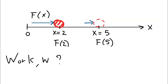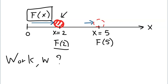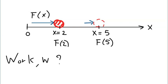To get an idea about how to compute work done by a variable force, look at the following schematic diagram. You have an object that is acted upon by a force that is dependent on the coordinate of the object. So when the object is at x equals 2, the value of the force is f evaluated at x equals 2. And as it moves to x equals 5, the magnitude of the force acting on this object is f evaluated at x equals 5. If such a force is displacing an object from this point to that point, how do you compute the work done by such a force?